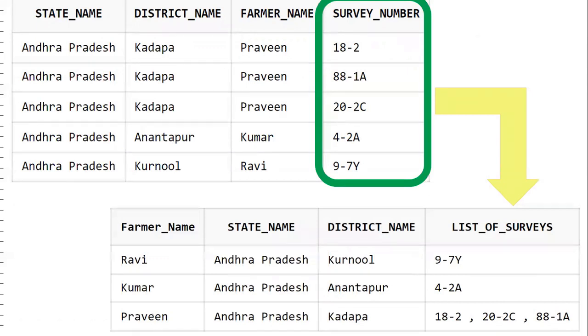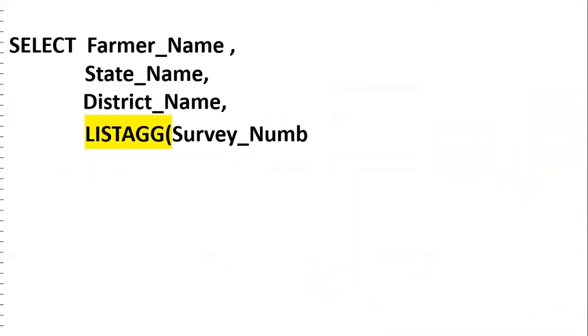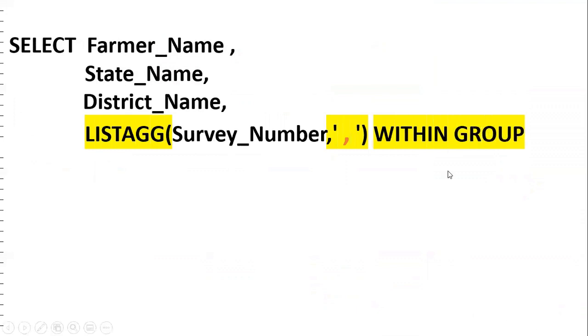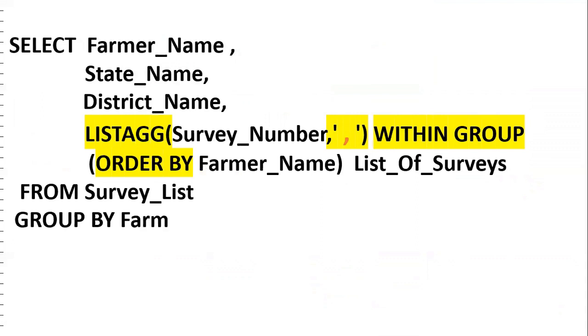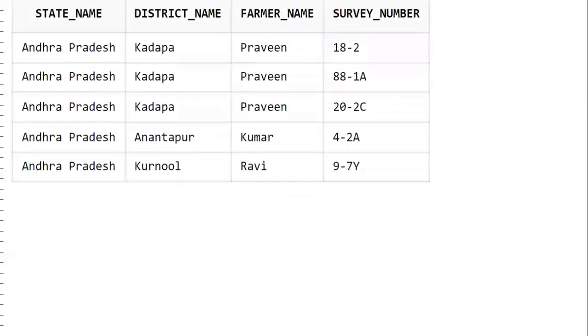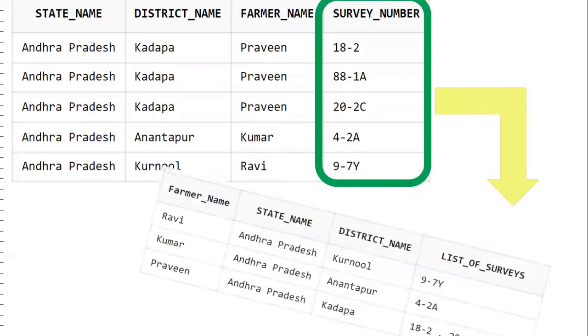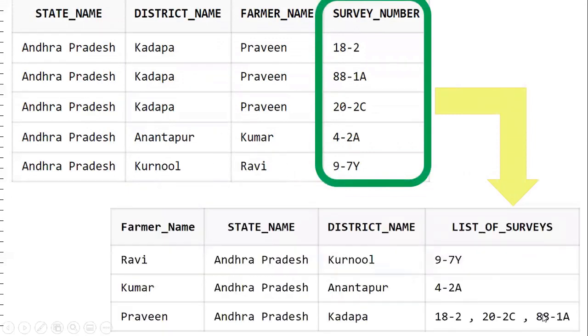To solve this requirement using LISTAGG, the query selects farmer name, state name, district name, and LISTAGG(survey_number, ' , ') WITHIN GROUP ORDER BY survey_number AS list_of_surveys FROM the table, GROUP BY farmer name, state name, district name. This gives us the exact comma-separated output. If you want hyphen or hash as delimiter instead of comma, we can change it based on the requirement.